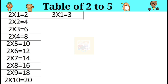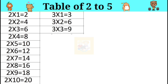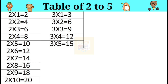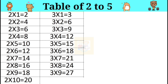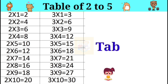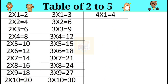Table of three. Three ones are three. Three twos are six. Three threes are nine. Three fours are twelve. Three fives are fifteen. Three sixes are eighteen. Three sevens are twenty-one. Three eights are twenty-four. Three nines are twenty-seven. Three tens are thirty.